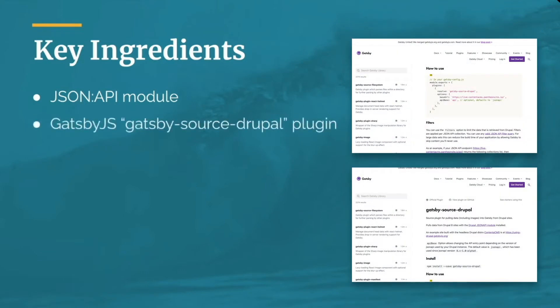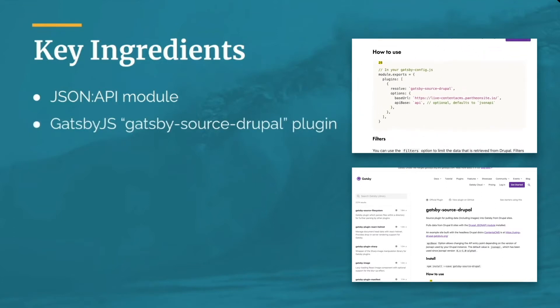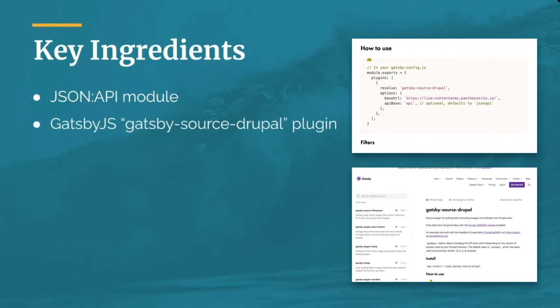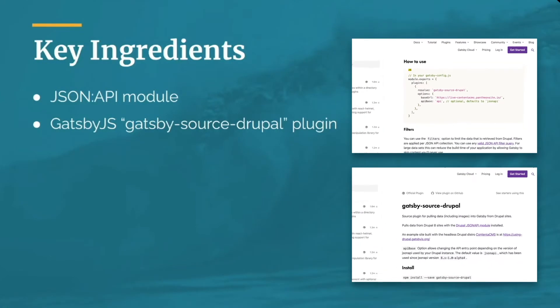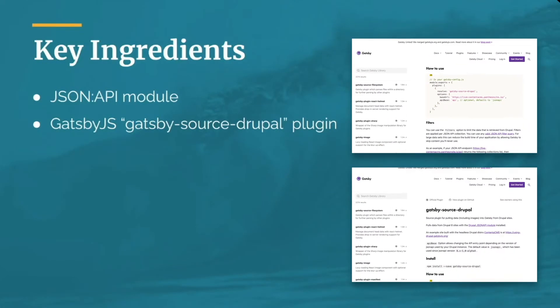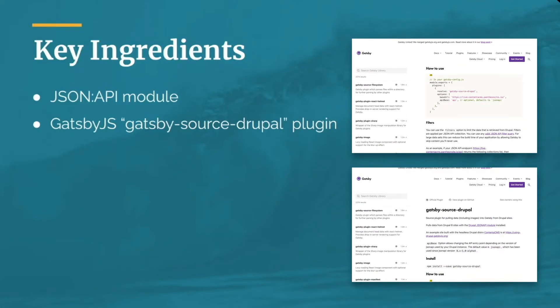The next thing you need to do in order to integrate with Gatsby.js is to add a source plugin that will connect the Gatsby application to the content being served by Drupal. Gatsby has a host of source plugins that connect to any number of data sources, including Drupal, WordPress, and many other platforms.